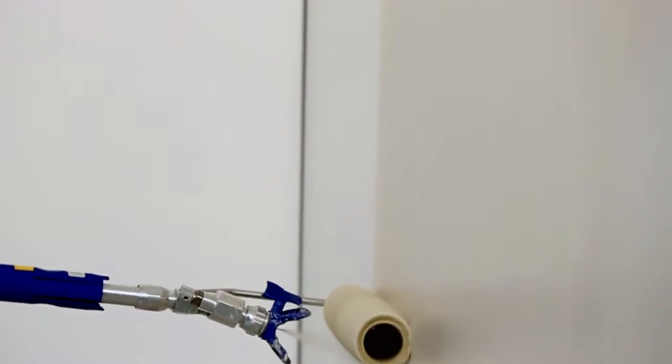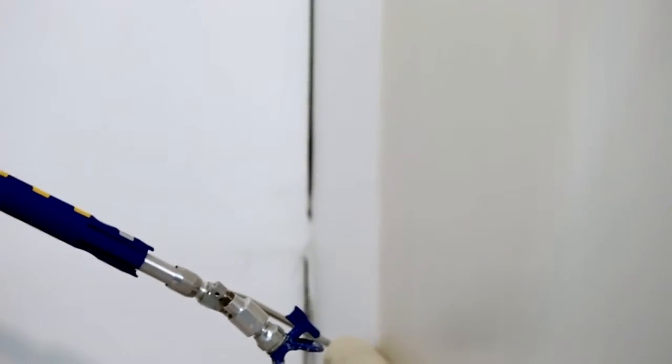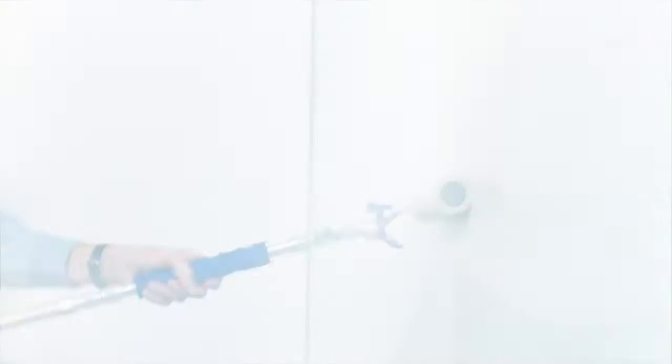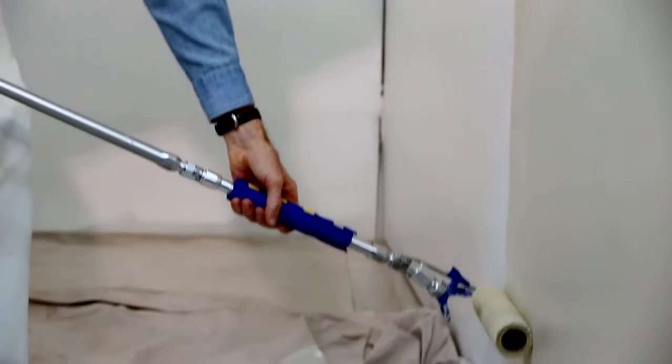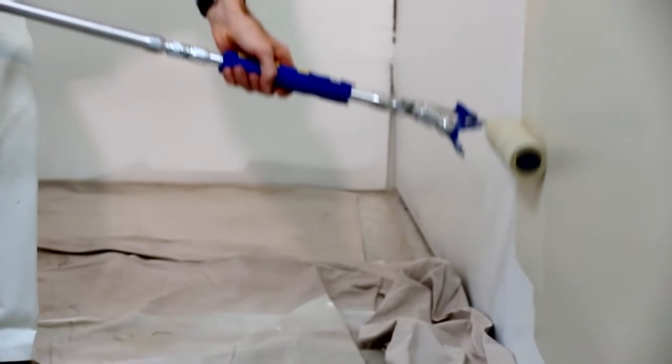Simply spray and roll on the downstroke, and only roll on the upstroke. You can stop spraying a foot or two above the floor and continue rolling down to avoid spraying the floor or trim.